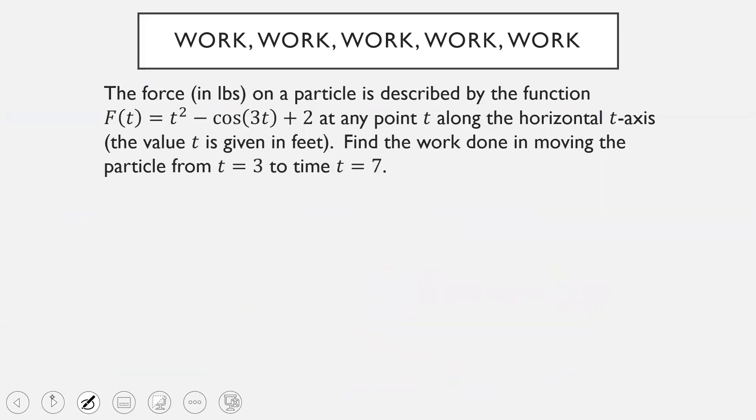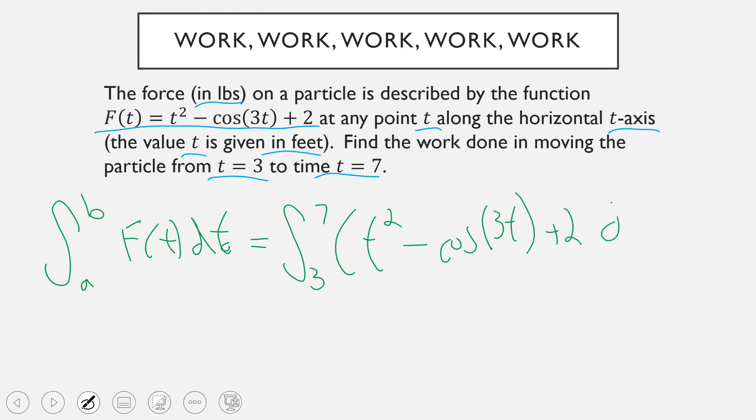Okay. So what does that look like in practice? Well, here we have a problem where we're given the force in pounds. So notice now they're not using Newtons, they're using pounds. On a particle that's described by the function this one. And you put T along the horizontal T axis. So here rather than using the X axis, we're using the T axis. And they tell us those values are given in feet. And we need to find the work done in moving the particle from T equals 3 to T equals 7. So to do this, we just use our formula from the previous slide. So it's going to be the integral from A to B of the force function. And actually, I wrote F of X. I should use F of T since that's our input variable here. This would be F of T, dT. This would become the integral from 3 to 7 of our force function, which is T squared minus cosine of 3T plus 2, dT.